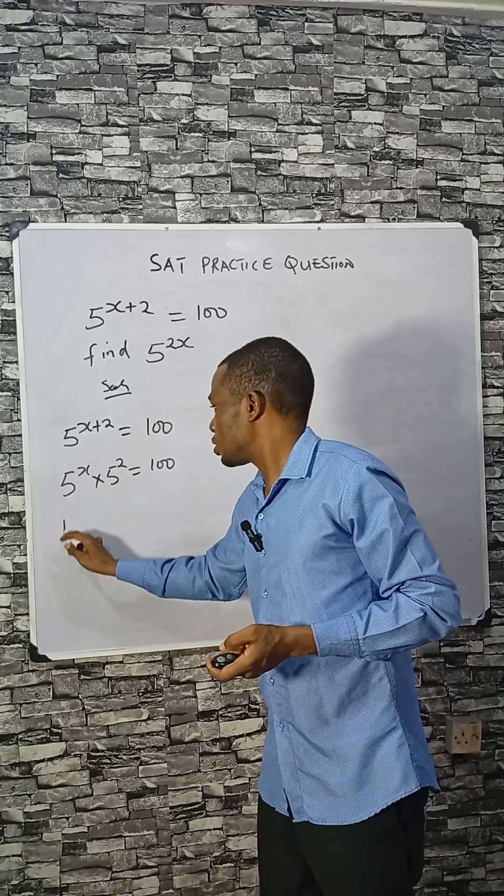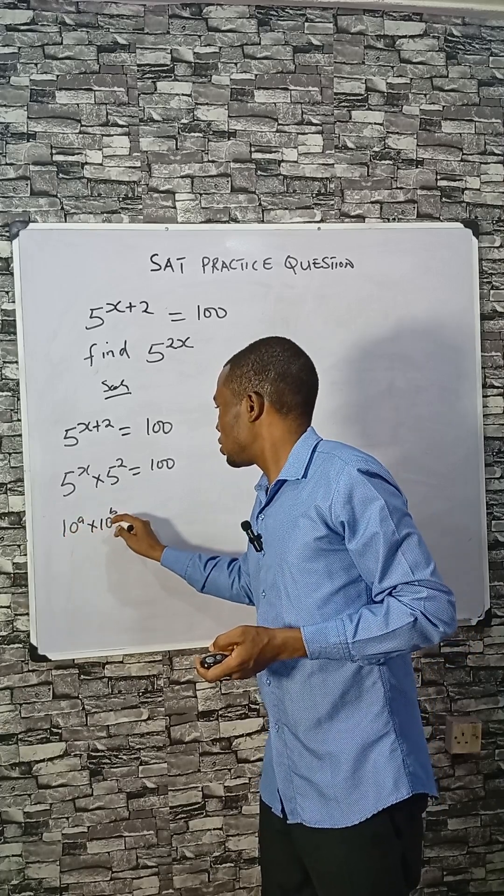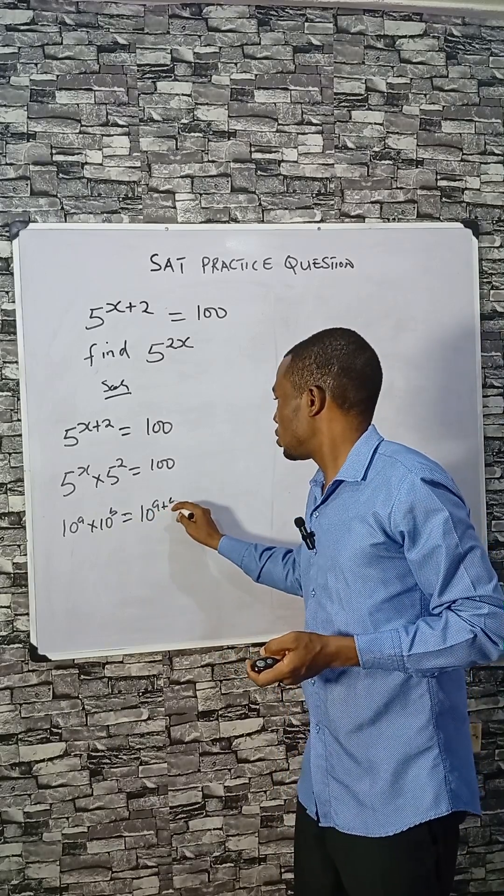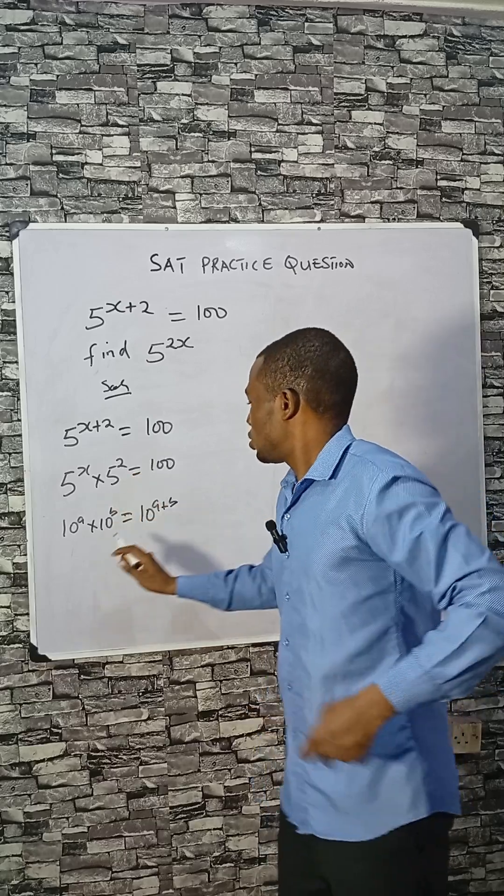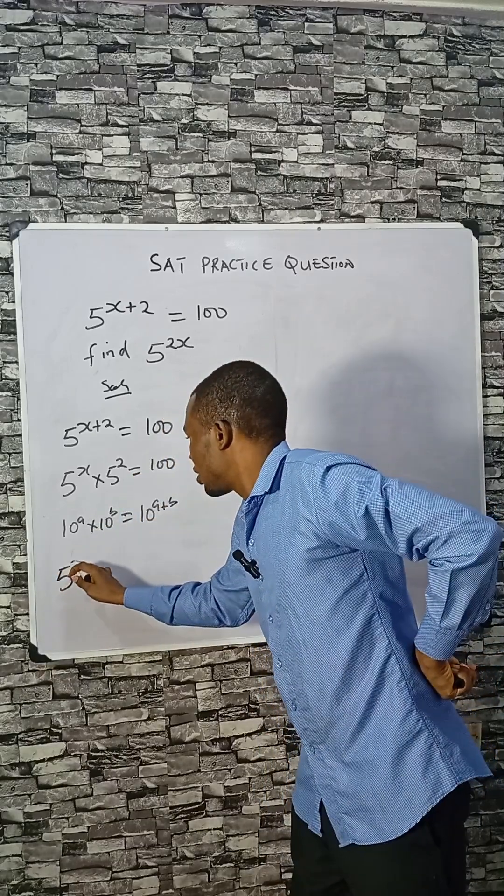I'm doing this because 10 raised to the power of a times 10 raised to the power of b, having the same base, can be written as 10 raised to the power of a plus b. So if you go back, consider this is the same thing.